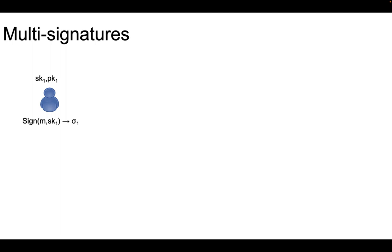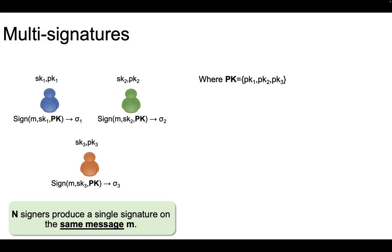Let me start by recalling the idea of multisignatures. Consider a signer with a secret key and public key. In order to sign a message, the signer signs using their secret key and produces a signature sigma. The goal of a multisignature is to allow n distinct signers to produce a single signature on the same message. There is a trivial way to construct a multisignature where the common public key used to verify the signature — denoted as PK_BOLD — is basically the collection of the public keys.